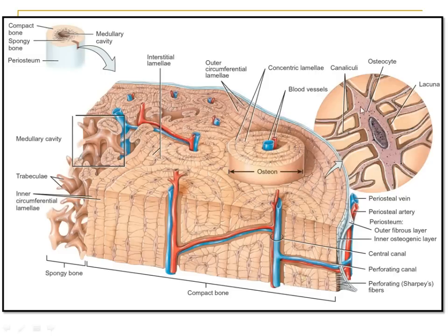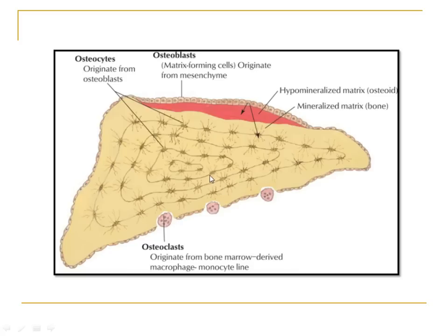Osteocytes have different processes which pass through canals in the bone known as canaliculi, allowing one osteocyte to communicate with the next. The Volkmann's canal is the canal containing blood vessels through which the Haversian canal of one osteon communicates with the next osteon — that is the basic difference. Another type of cell in the bone is the osteoclast — 'C' for cutting — these are the bone-resorbing cells which help in the remodeling of bone, and they are derived from the macrophage-monocyte system.